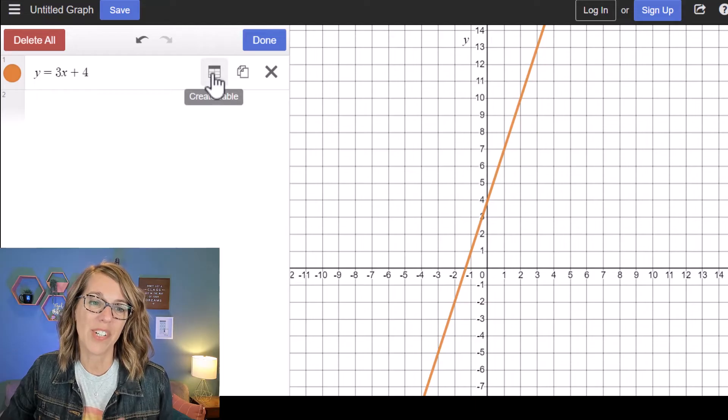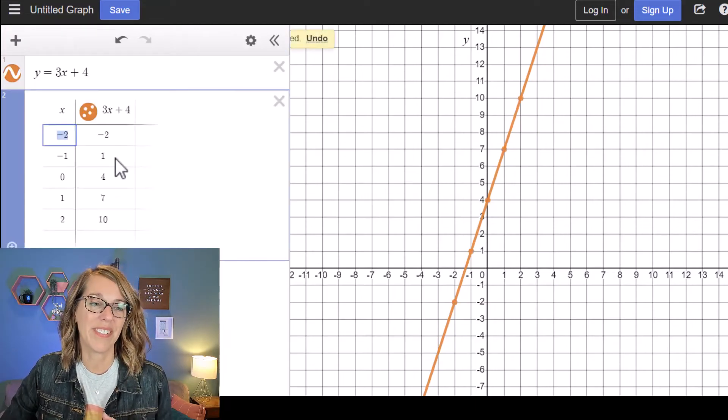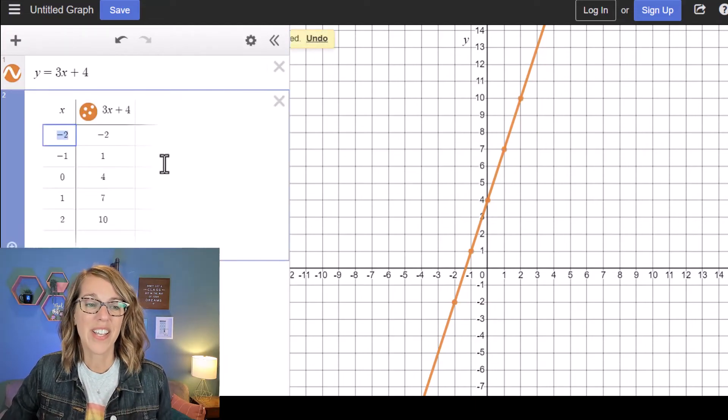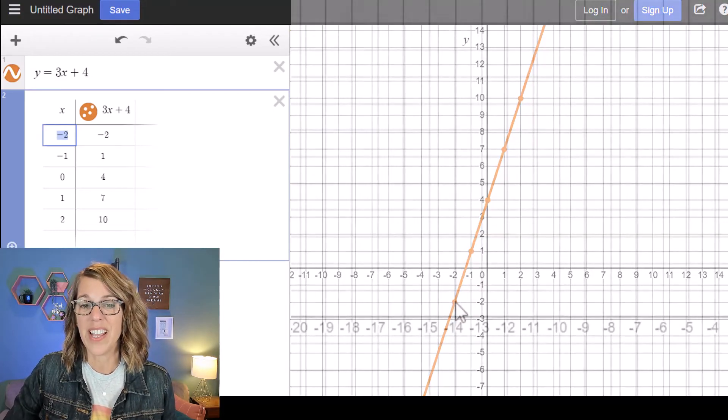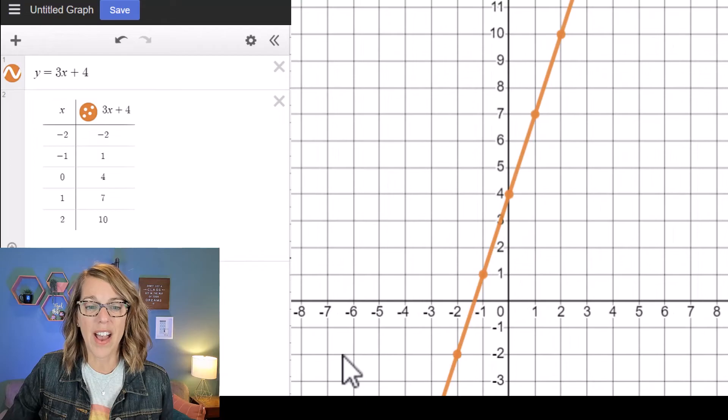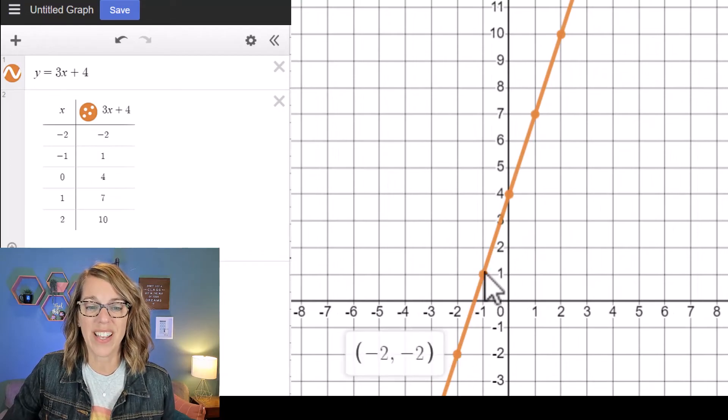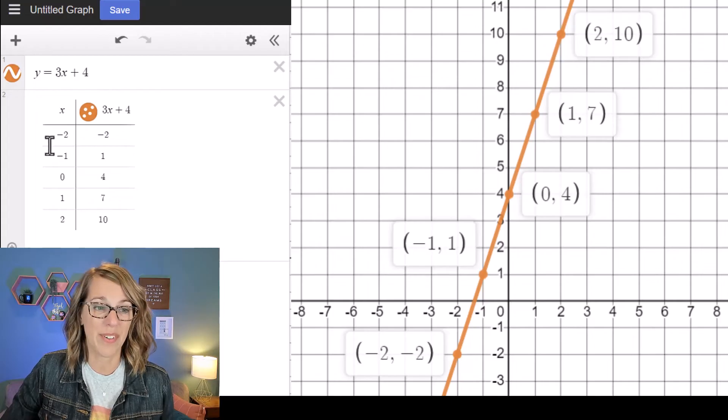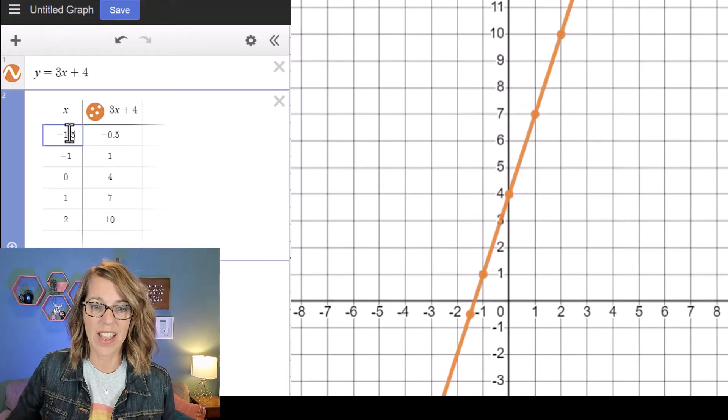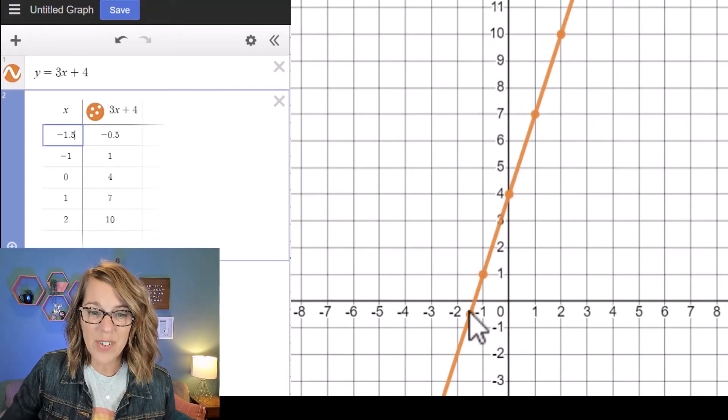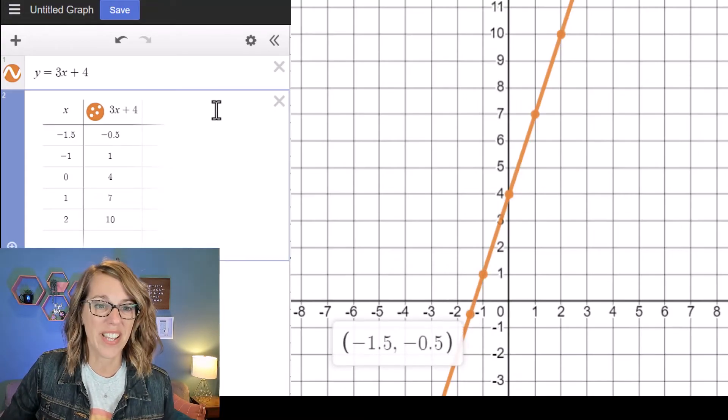I'm also given the option to change this into a table, and as I create my table you'll notice that it just gives me automatically five different points. Over here on my graph I've got those points and I can click on the points to reference what I've got in the table. I can even change those points. Let's say I want to change this to a negative 1.5 and it gives me that new corresponding point.